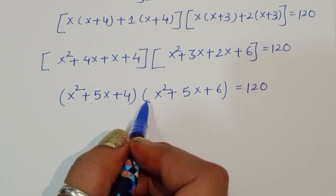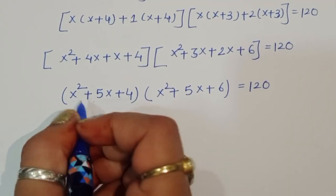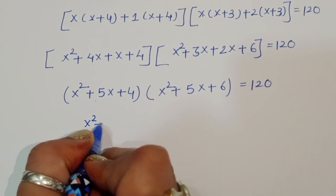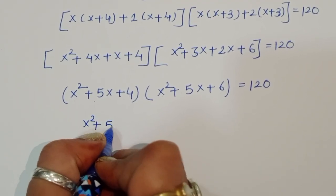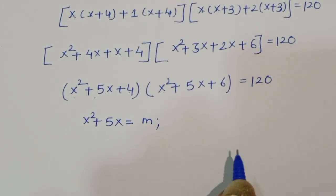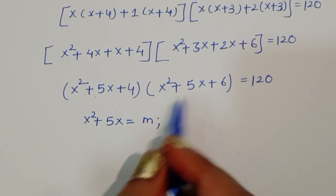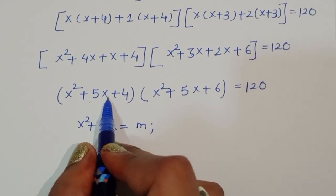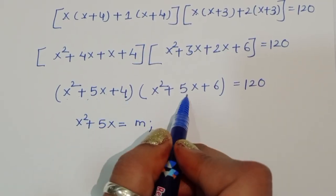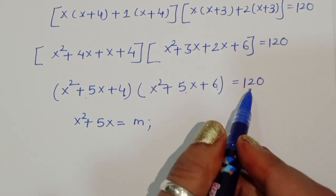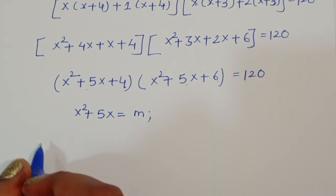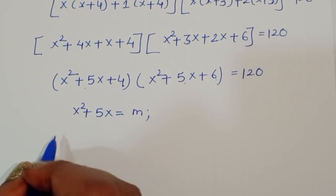Let x² + 5x = m. So we can write (m + 4)(m + 6) = 120.